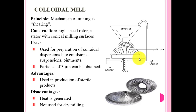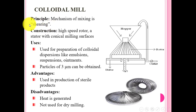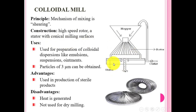The colloidal mill mechanism of action is shearing. Shearing is the main mechanism because this dosage form is much more viscous than other dosage forms. The construction consists of a high speed rotor and a stator with a conical milling surface. This is the stator and this is the rotor; this is the hopper for the inlet or feeding of material into the instrument.